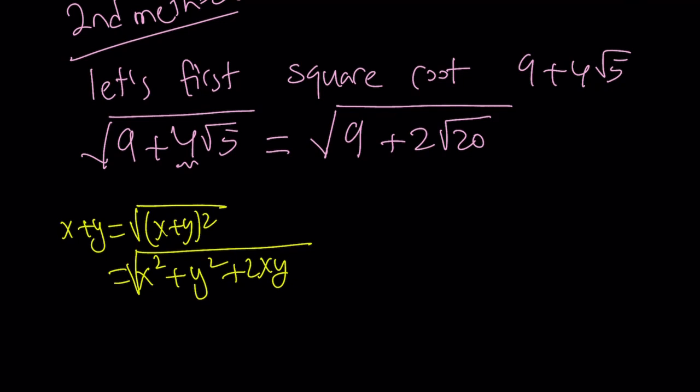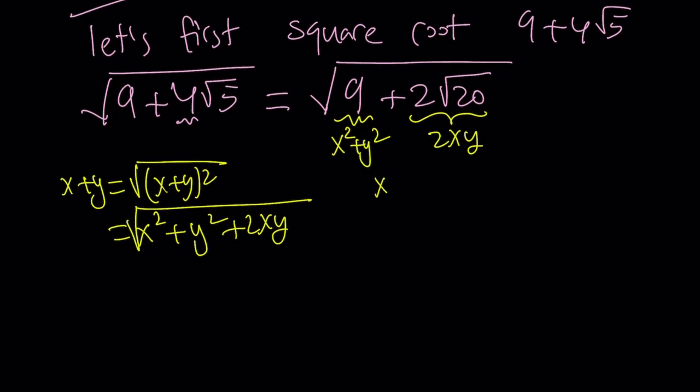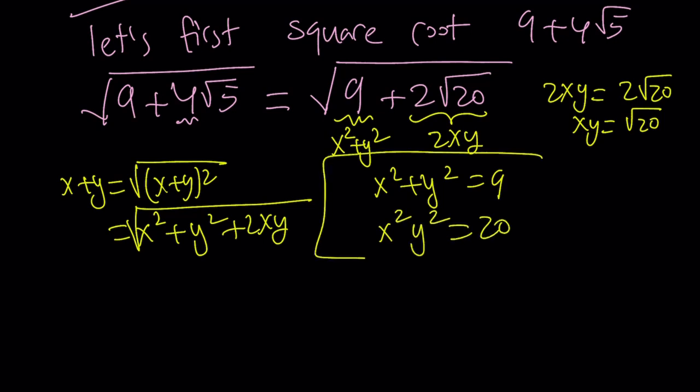After writing it this way, obviously you realize this is supposed to be 2xy and this is supposed to be x squared plus y squared if this can be simplified. And this gives us a system. x squared plus y squared equals 9. And if you set 2xy equal to 2 root 20, from here you get xy equals square root of 20. If you square both sides, you get x squared y squared equals 20. In other words, you are looking for two numbers whose sum is 9 and whose product is 20. And those numbers are easy to find.